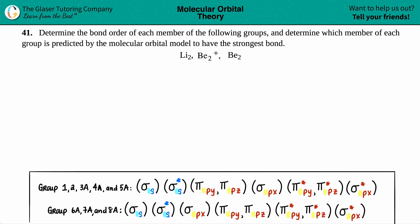Number 41. Determine the bond order of each member of the following groups and determine which member of each group is predicted by the molecular orbital model to have the strongest bond. We have Li₂, Be₂⁺, and Be₂.